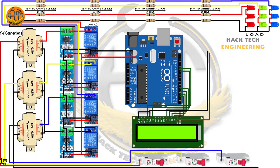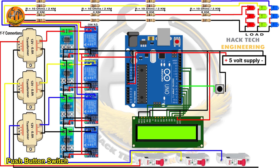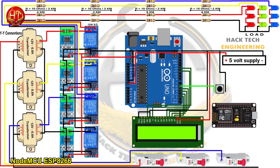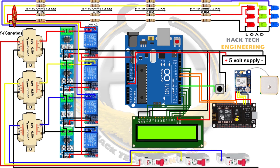After that, I connected a 5 volt DC supply positive terminal with all common VCC and the negative terminal with all common ground. A push button is connected at digital pin number 6 of Arduino. Then I took a NodeMCU for uploading data to the Arduino IoT cloud, and a GPS module NEO-6M for finding the fault location coordinates, and made connections accordingly. I made serial communication between NodeMCU and Arduino Uno using pin number D5 and D6 of NodeMCU with digital pin numbers 9 and 10 of Arduino Uno.